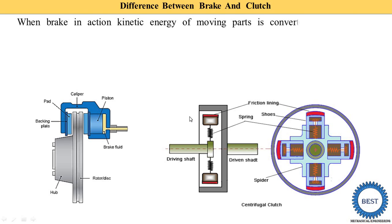The second difference: when the brake is in action, the kinetic energy of the moving part is converted into frictional resistance. The brake is used to stop or reduce the motion of the rotating part. Here you can see the disc, which is connected to the wheel hub — the wheel hub is the rotating part and the disc also rotates with it. When we apply the brake, the braking pad comes in contact with the disc, and the kinetic energy of the disc is converted into heat energy through friction. This is called frictional resistance, and the temperature of the pad increases.